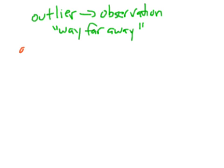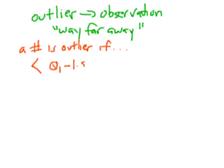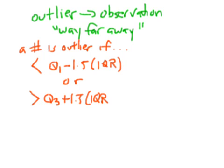A number is an outlier if it is, there's two possibilities. A number is an outlier if it is less than Q1 minus 1.5 times the IQR, or it is more than Q3 plus 1.5 times the IQR. This is the outlier rule right here.